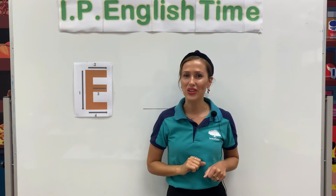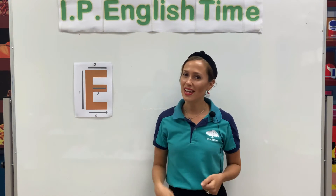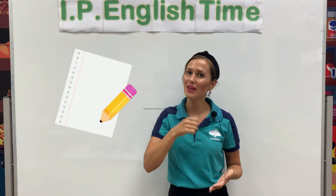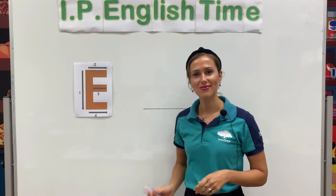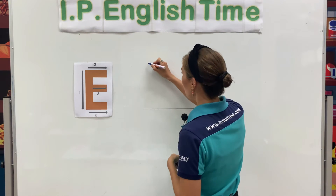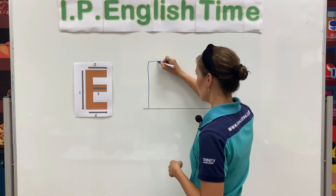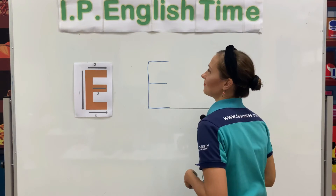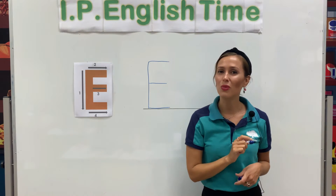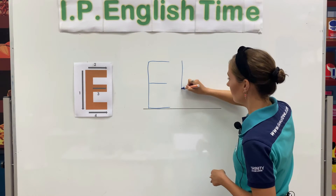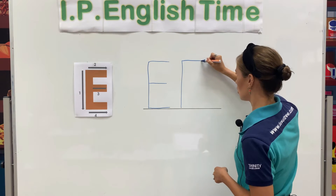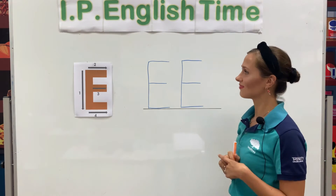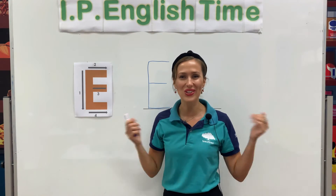Now it is time to learn how to write the capital letter E. If you are ready, let's take a piece of paper and a pencil, and we will write together. Ready? One, two, three, four. Let's do that one more time. Big letter E. One, two, three, four.